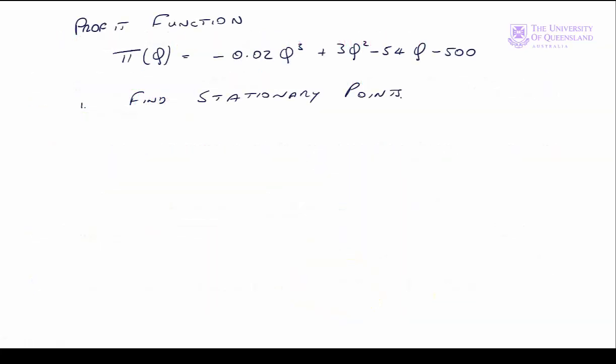We have our profit function. Our first step is to find the stationary points. We need the first order conditions. Note that the first root of π prime q is equal to zero. π prime q is equal to minus 0.06q squared plus 6q minus 54. Set that equal to zero.